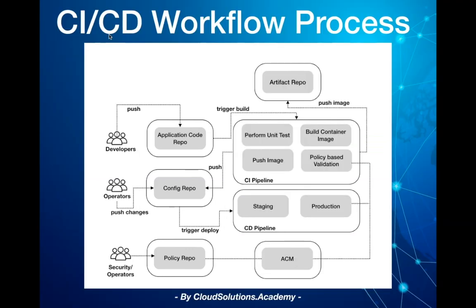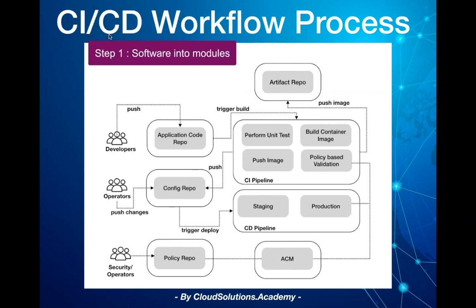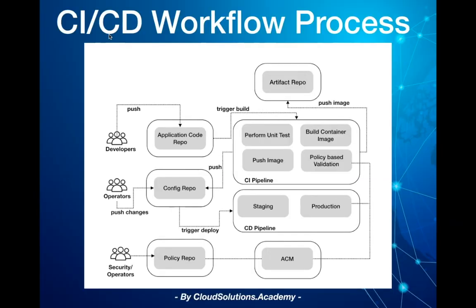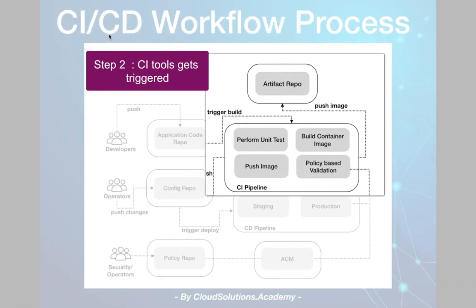At a high level, the process consists of the following. Usually you would break down the software application into a set of modules. Developers work on respective modules and check in their code into a central Git source repository. Once the code is checked in, continuous integration tools like Jenkins or Cloud Build are configured to listen to any changes in the Git source repository.